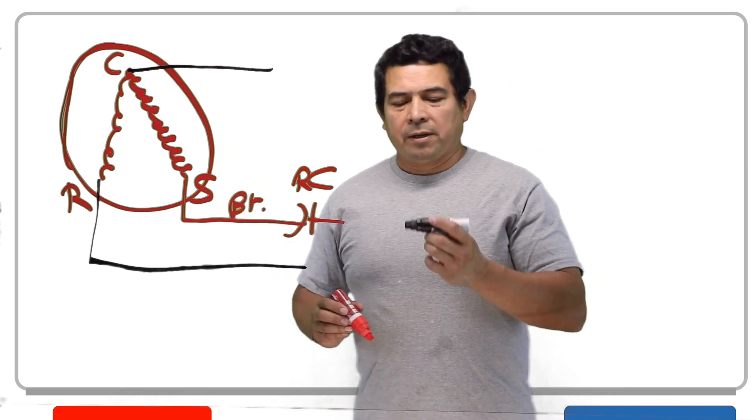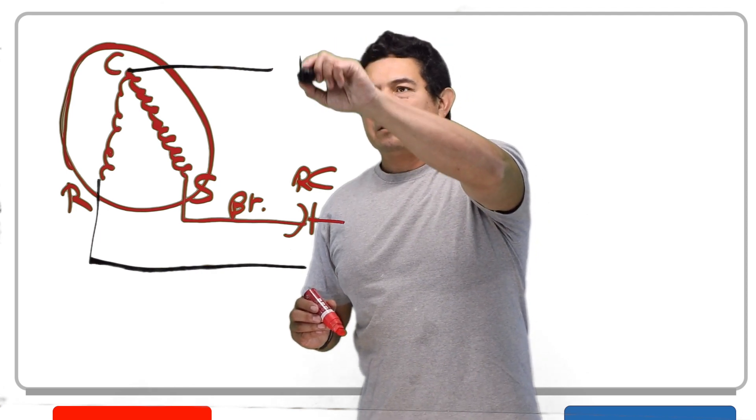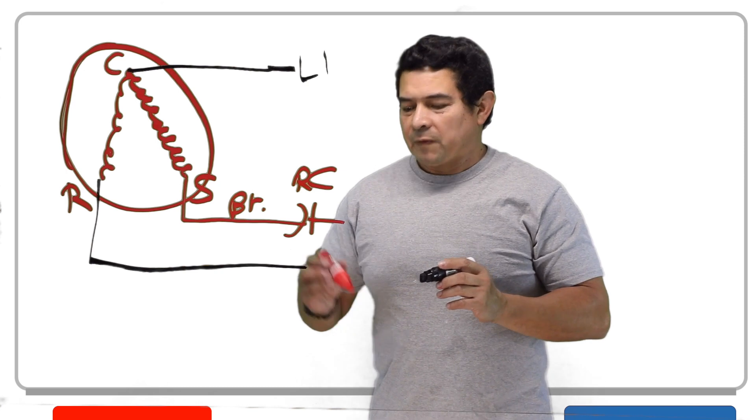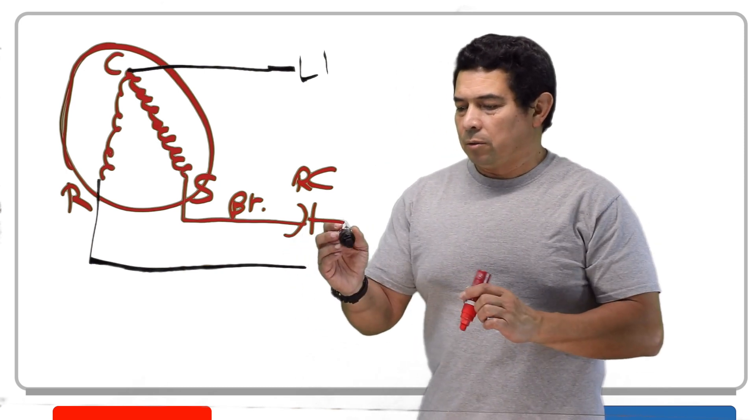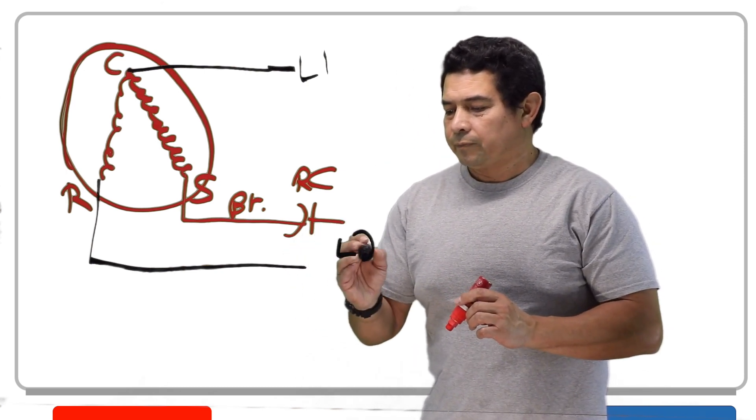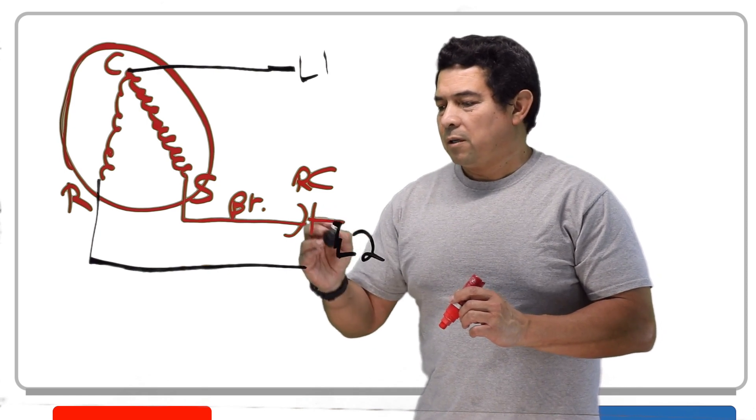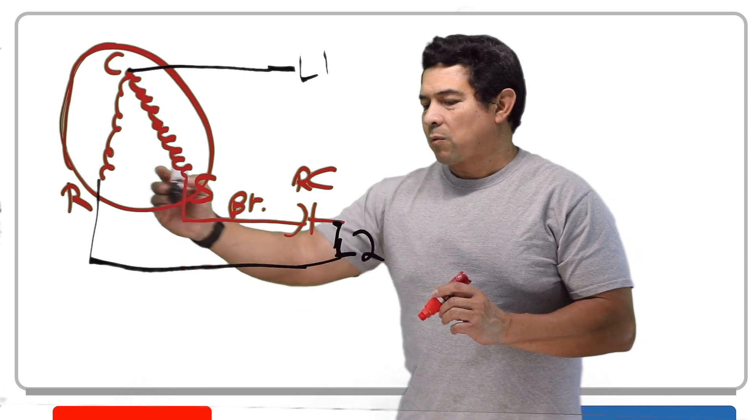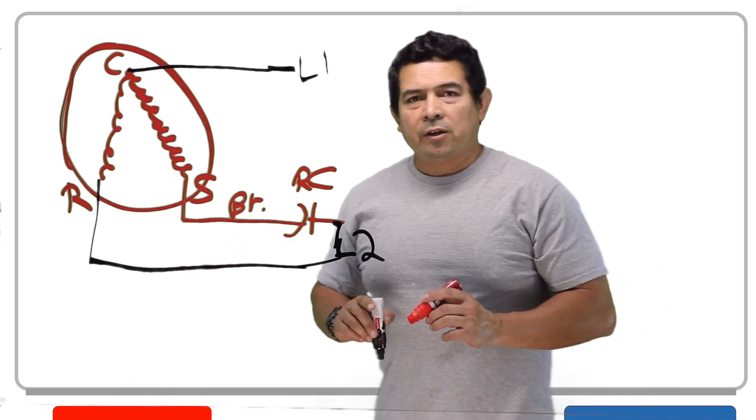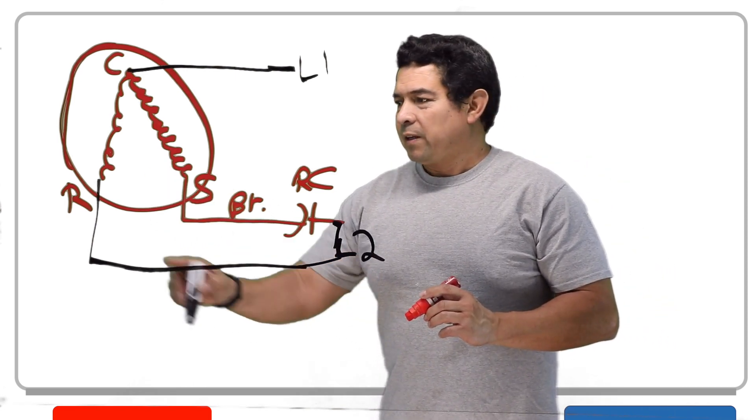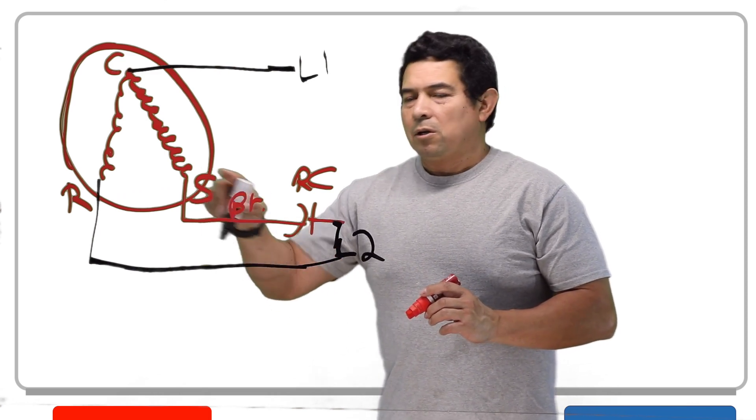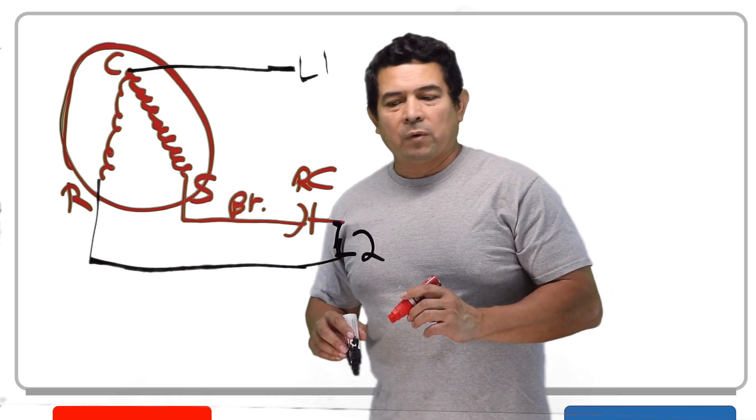Also, another thing that's going to happen is we're going to have, let's say, for example, L1 here. L1 is going to feed common. Then we're going to have, let's say, L2 right here. And that's going to feed my capacitor. And L2 is also going to feed my run winding.